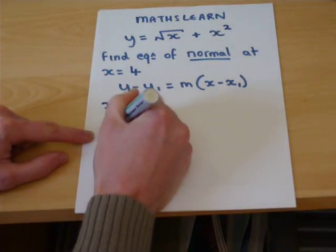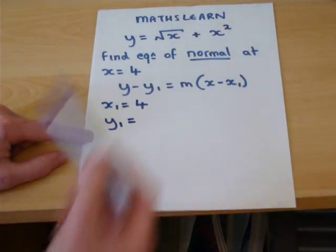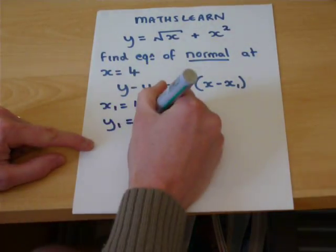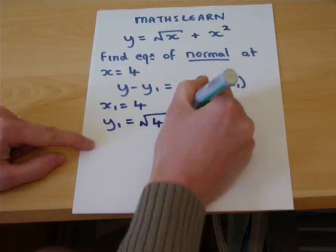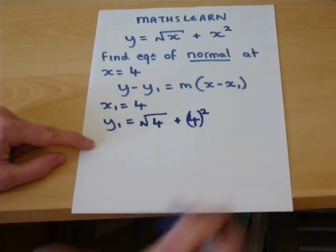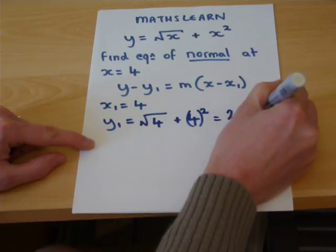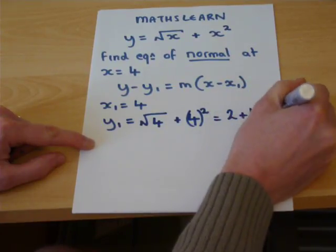So y1 must equal, we refer back to the equation given for the curve, the square root of 4 plus 4 squared, which equals 2 plus 16, which equals 18.